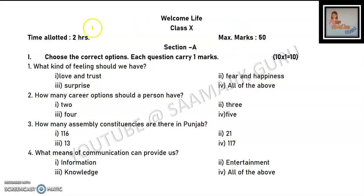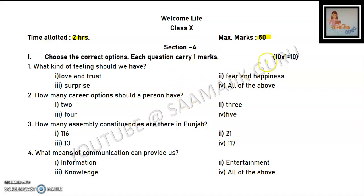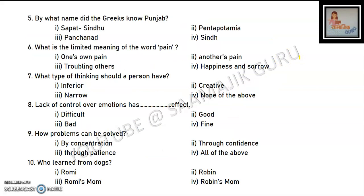The timing will be two hours and your paper will be 50 marks. Section A will give you MCQs — 10 questions will be given, and every question will be 1 mark, so total Section A will be 10 marks.